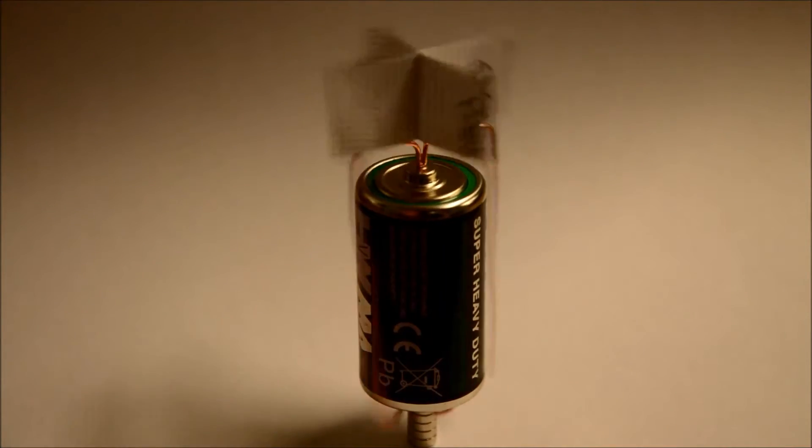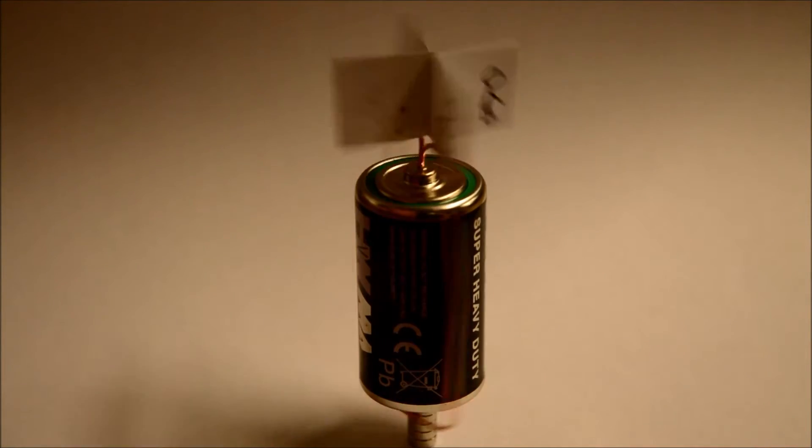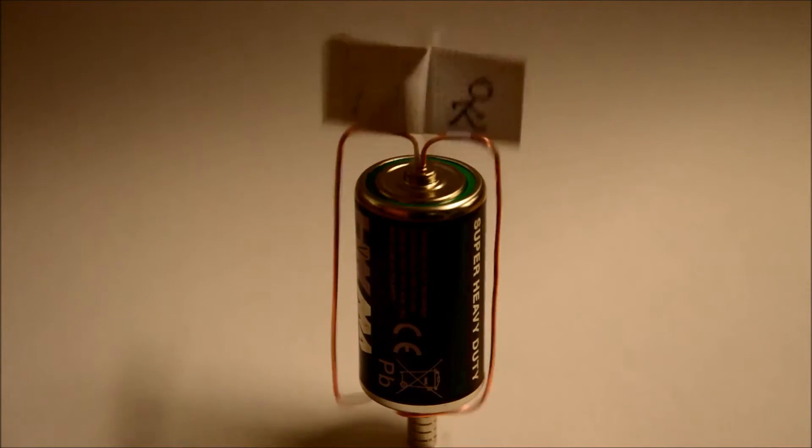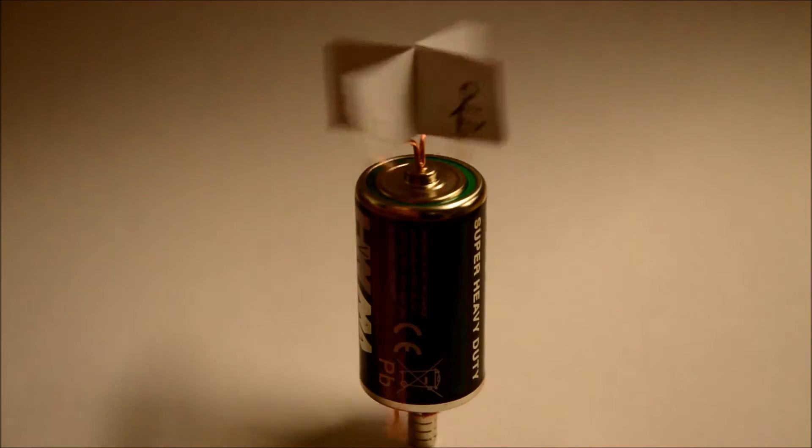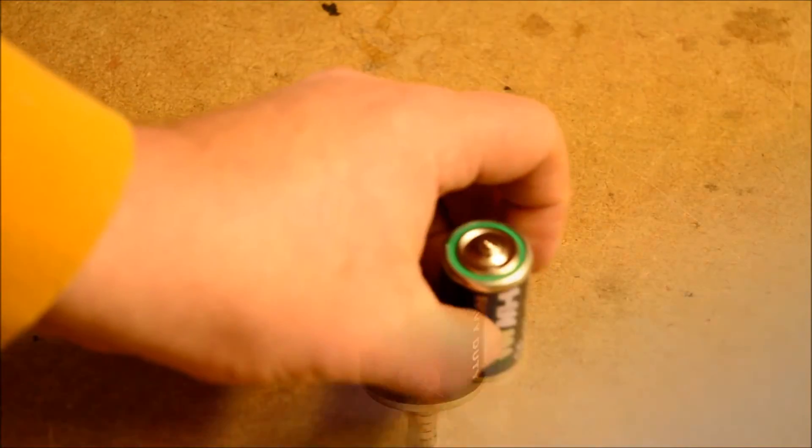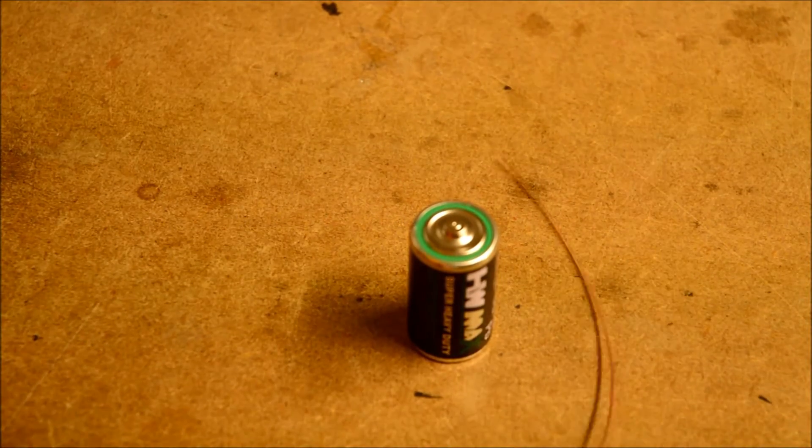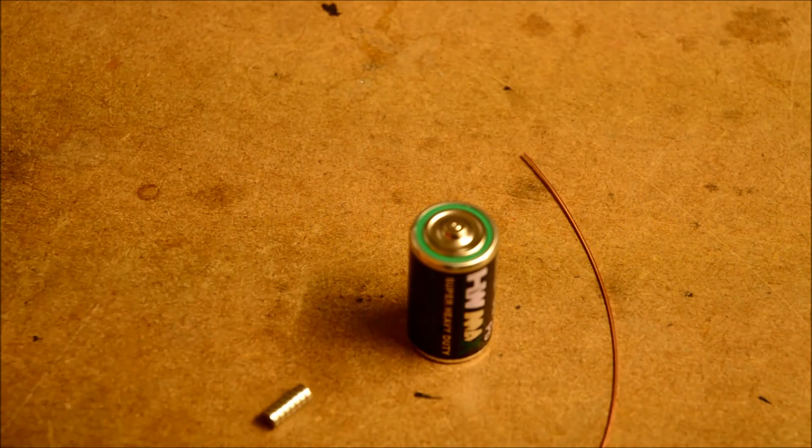It's a very simple homemade zoetrope and it's basically made by just creating a very simple electric motor which I'm going to show you how to do using a battery, a piece of copper wire and some magnets.